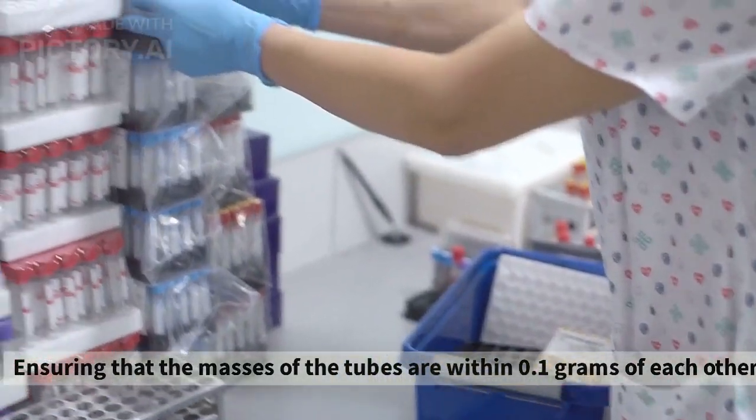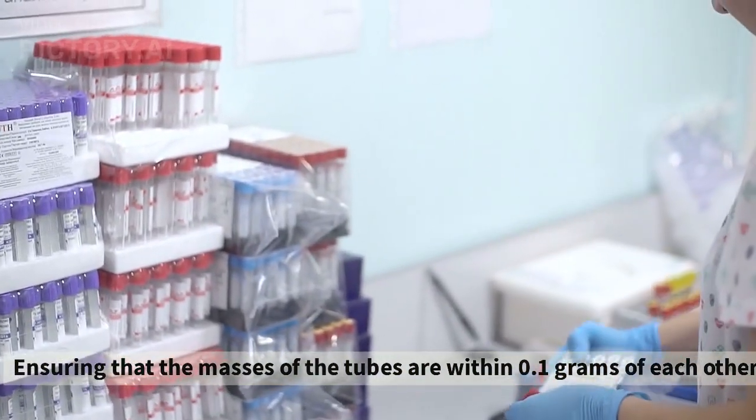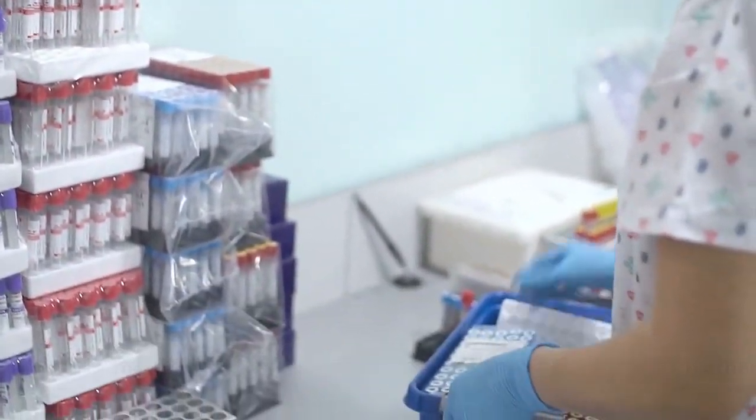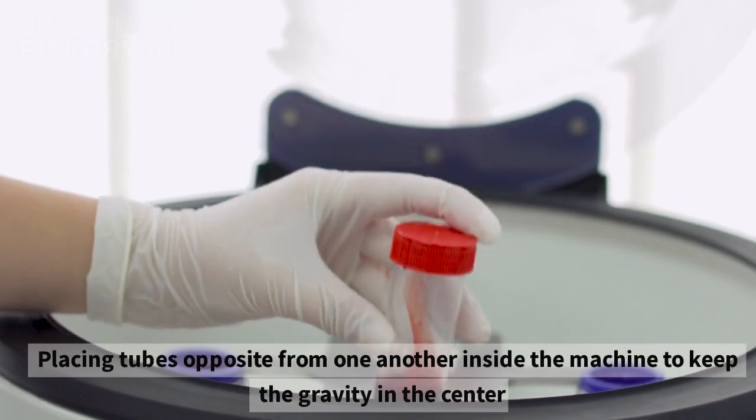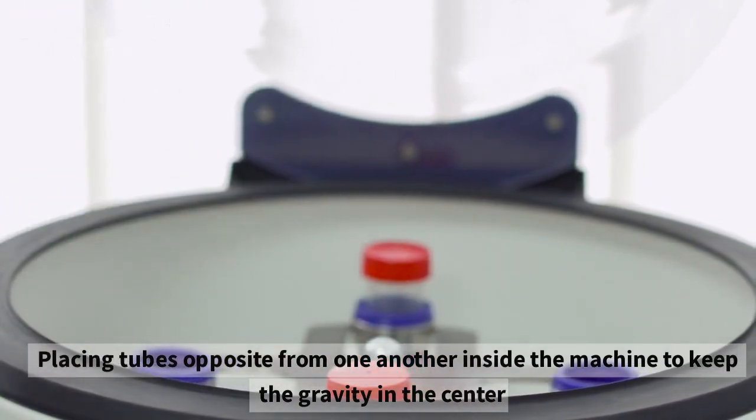Ensure that the masses of the tubes are within 0.1 grams of each other. Place tubes opposite from one another inside the machine to keep the gravity in the center.